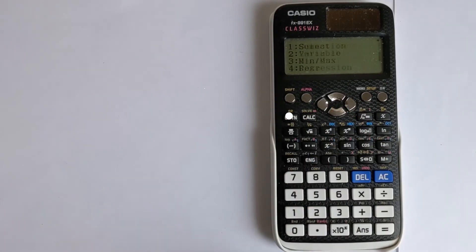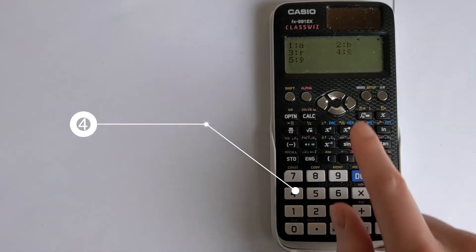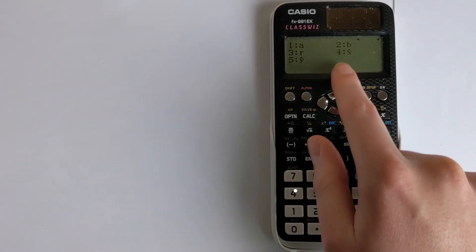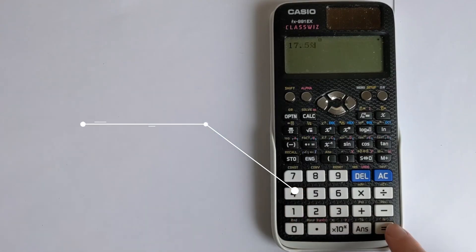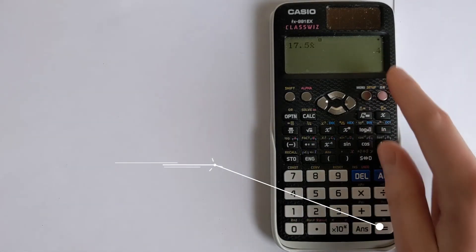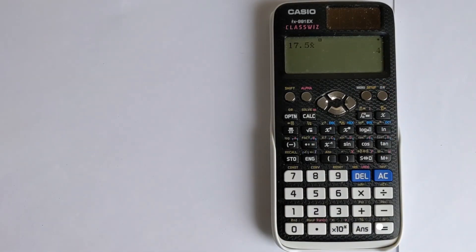Option, press down, then we go to regression, and then we want to choose the x here, and then we press equals, and it indeed gives you 4, so it works. So that's how you do linear interpolation on a Casio ClassWiz calculator.